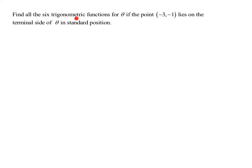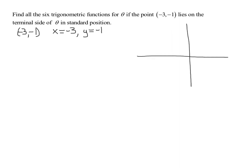In this problem, we need to find all six trig functions for theta if the point negative 3, negative 1 lies on the terminal side of theta when drawn in standard position. So x equals negative 3 and y equals negative 1. Since both x and y are negative, we know our angle is in quadrant 3.